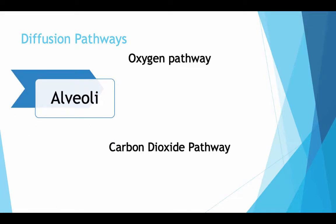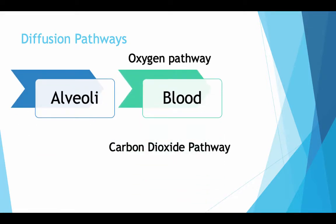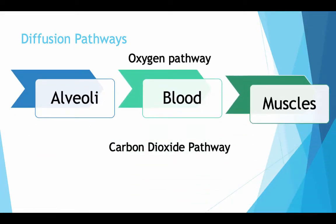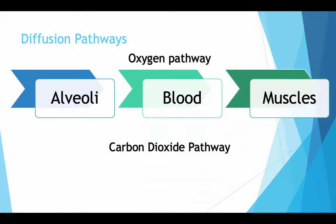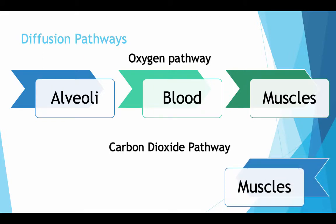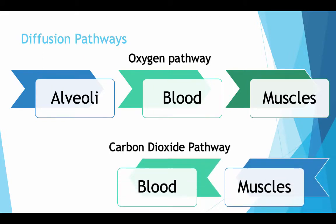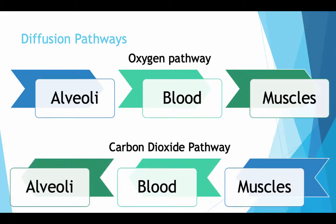Diffusion pathways: the oxygen pathway goes from the alveoli into the blood, then into the muscles. Carbon dioxide goes from the muscles back into the blood, then back into the alveoli.